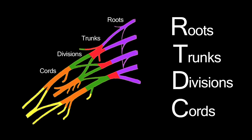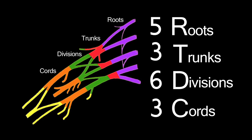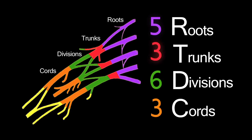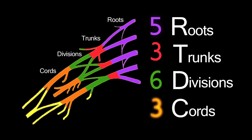Now, how many of each? Think of the numbers 5-3-6-3: 5 roots, 3 trunks, 6 divisions, and 3 cords.